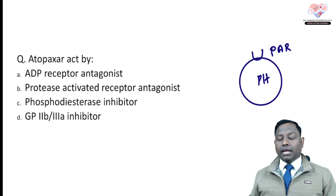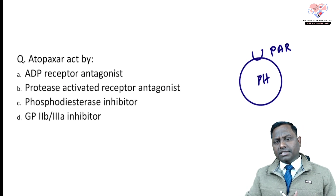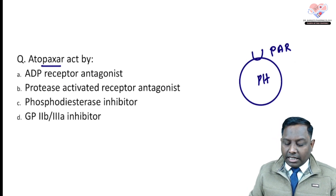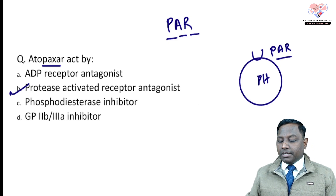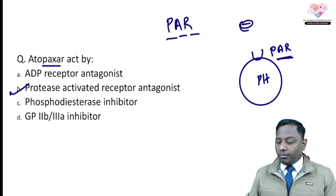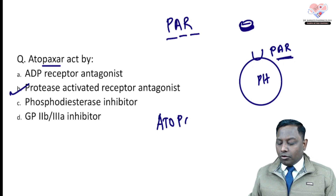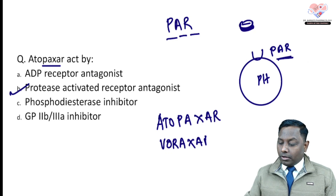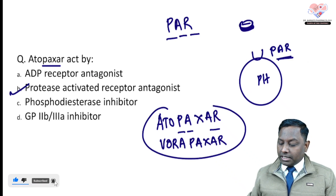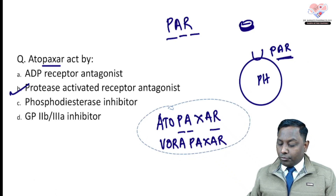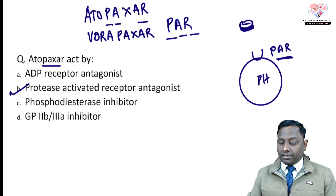The second question is about Etopaxar, which has been asked in previous examinations as well. Etopaxar is a PAR — Protease-Activated Receptor — inhibitor. This receptor is present on platelets, mainly for thrombin, and promotes platelet plug formation. The drugs in this class are Etopaxar and Vorapaxar — the name itself contains 'PAR' — so they are Protease-Activated Receptor inhibitors.